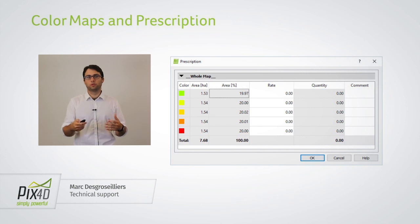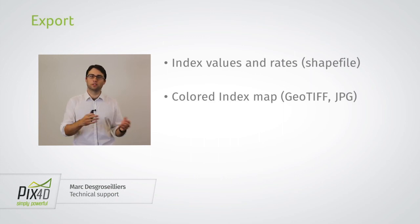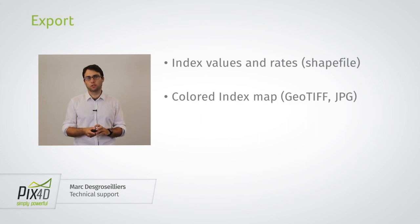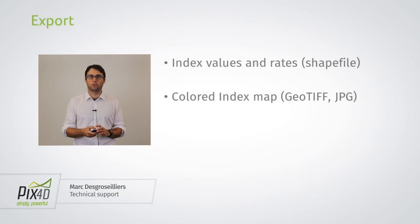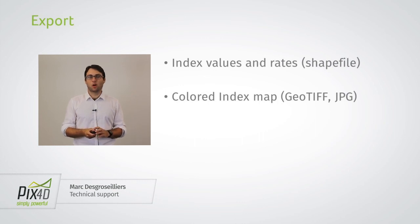You can export this information into a shapefile and put it in your smart tractor if it accepts this kind of input. It's also possible to export the colored index map if you need to share it — it can be exported as a JPEG file, a TIFF file, or a KML file for Google Maps. That's all I wanted to say about the Index Calculator today. I hope this allows you to get the most out of Pix4D Mapper, and I'll see you in the next video.